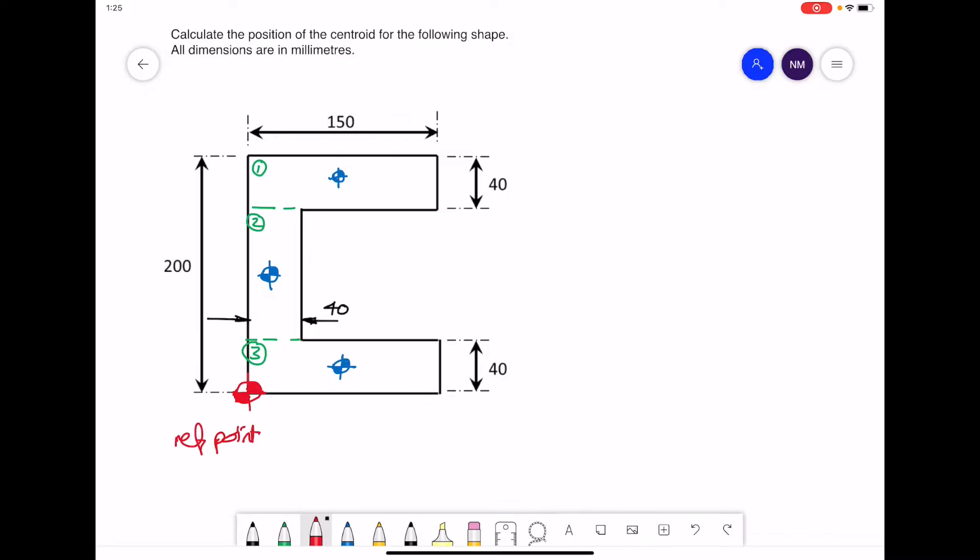Our reference point is like the origin on a graph, and we are going to measure the location of our three centers from our reference point or from our origin. On the right-hand side, I am going to write down the position of each of these three centers. Starting with the first one, the distance across, that is your x-coordinate, will be 75. And the height up will be 200, coming back 20, and that should be 180. So it's 75 and 180.